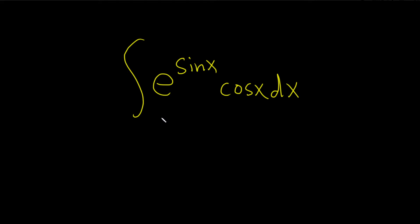Typically our goal is to let u be the inside piece with the hopes that our du, which is the derivative of u, appears somewhere in the problem. So you see if we let u equal sine x, the derivative of sine is cosine, so that should work out quite nicely.